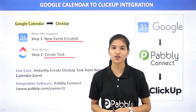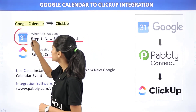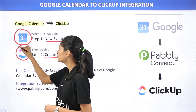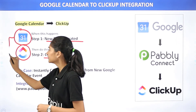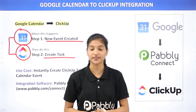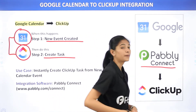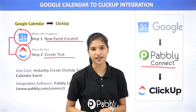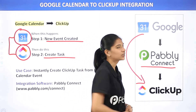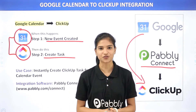Let us know what these two software applications are about. Google Calendar is a calendar service by Google, whereas ClickUp is a project management tool. The issue is that Google Calendar and ClickUp don't have any integration between them, and that is why we are going to use Pabbly Connect — an integration software which will help you transfer data from Google Calendar to ClickUp. The best part is you don't require any knowledge of coding.